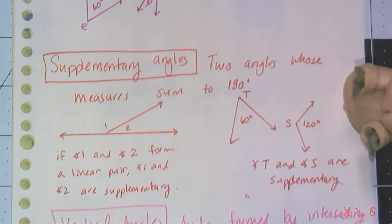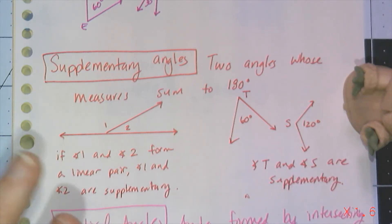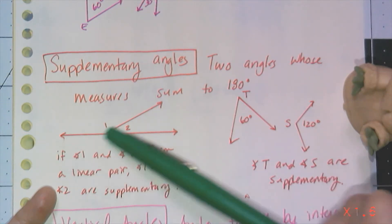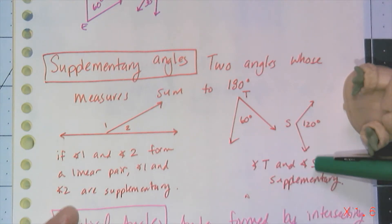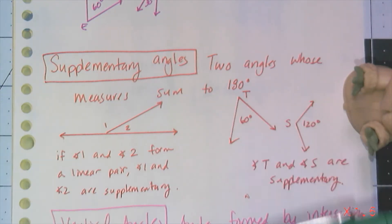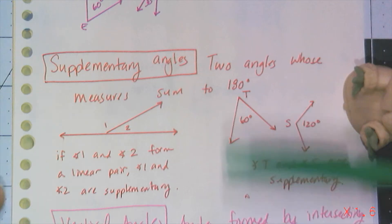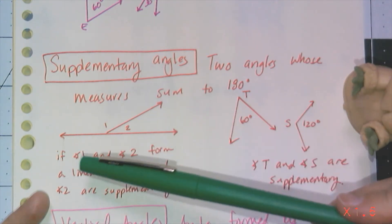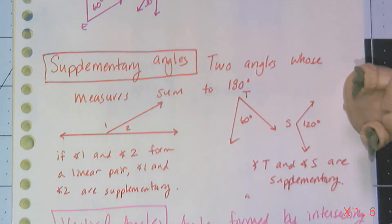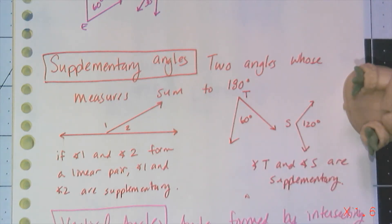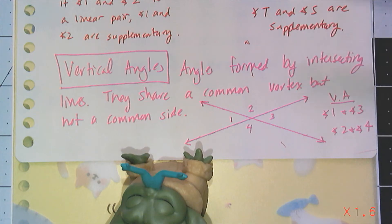When most people learn about complementary angles in middle school, they also learn about supplementary angles. These are two angles whose measures sum to 180 degrees. Like complementary angles, they can be drawn as connected or separated — the only requirement is that two angles' measures add up to 180 degrees. We know nothing about whether they share vertices or sides. So angles 1 and 2 forming a linear pair means they're supplementary, and angles T and S — 60 and 120 degrees — are also supplementary because they add up to 180.